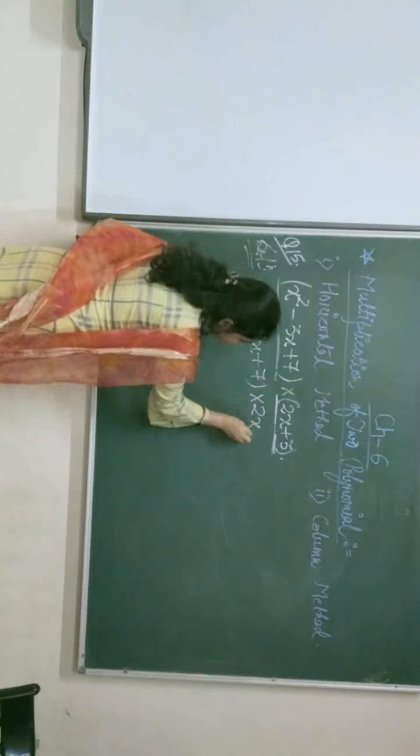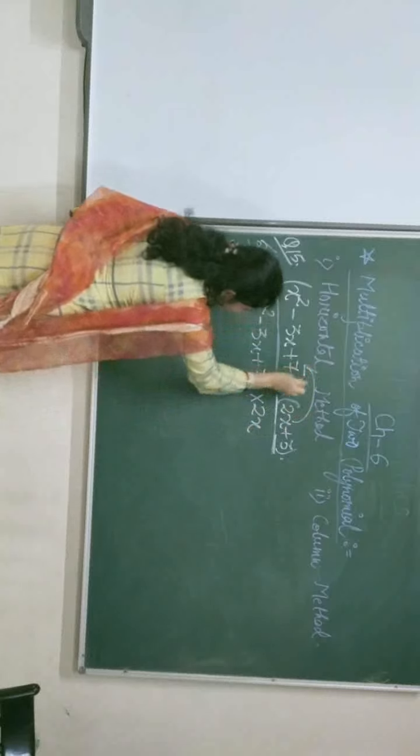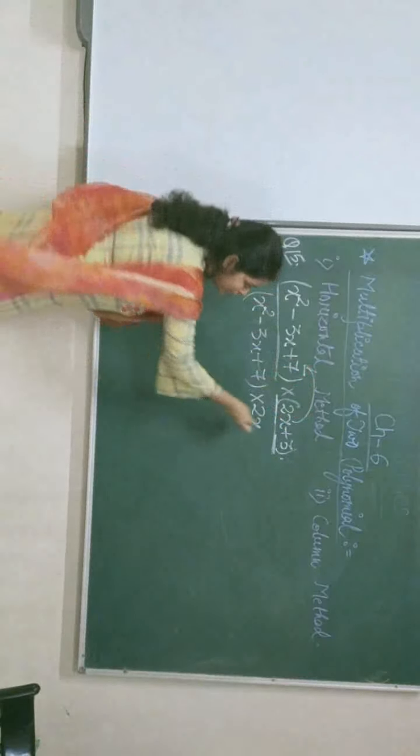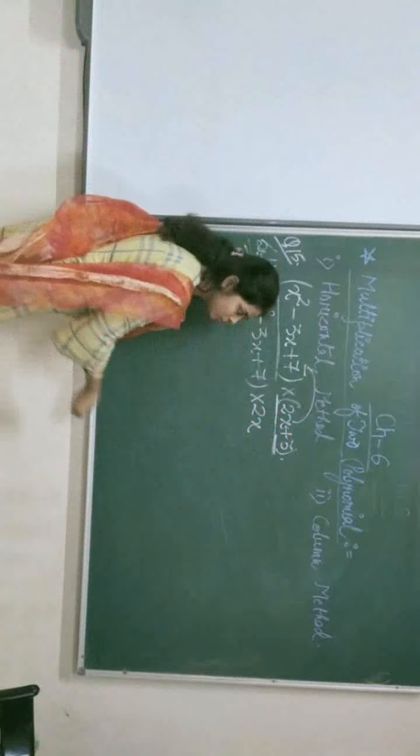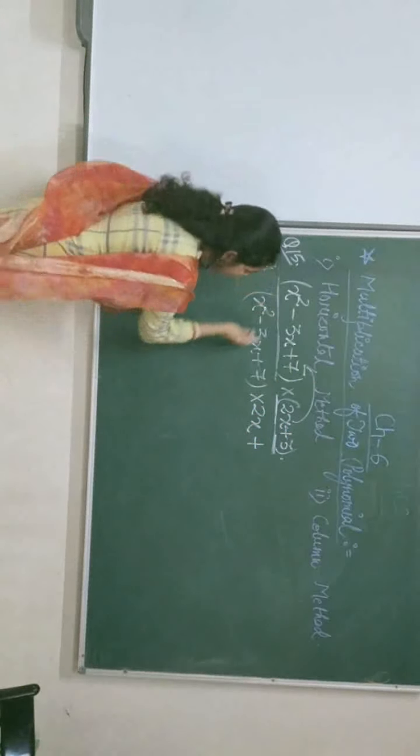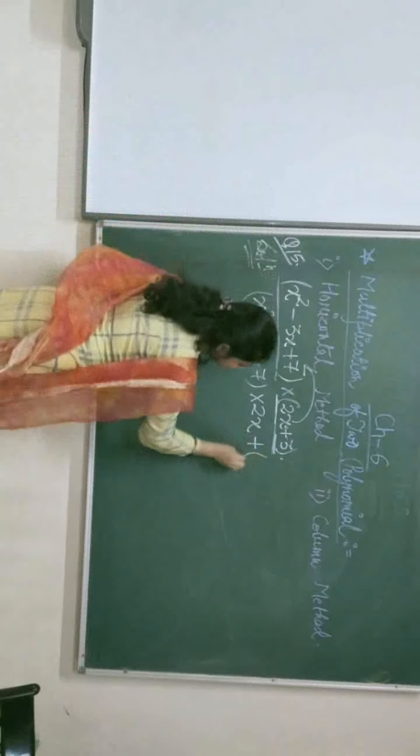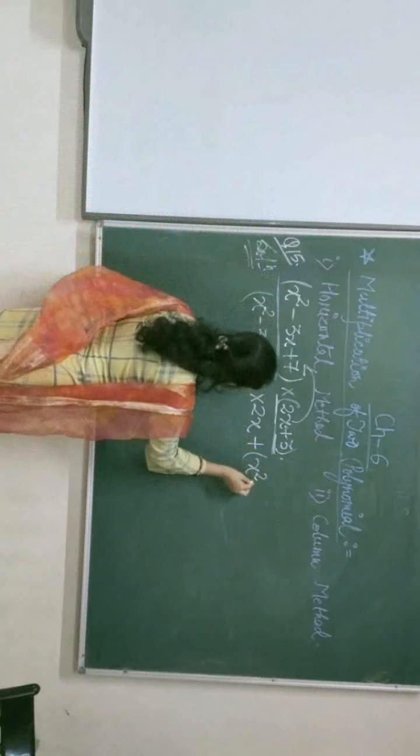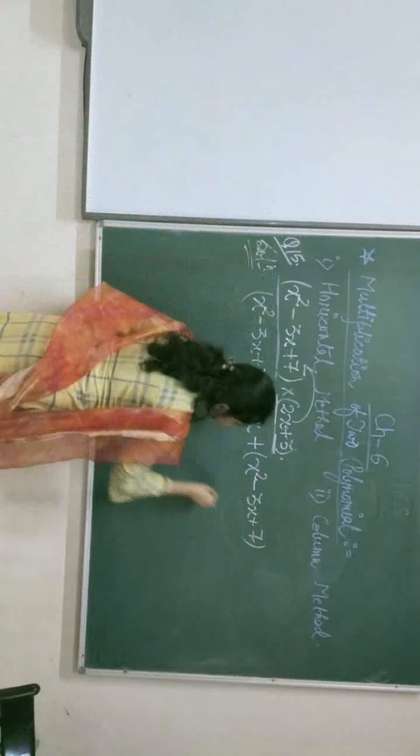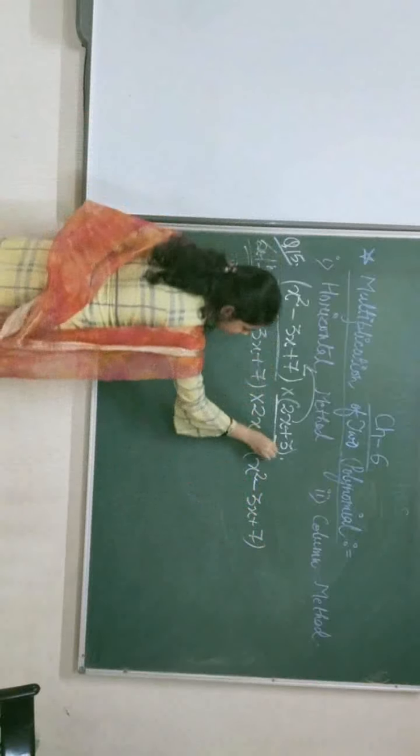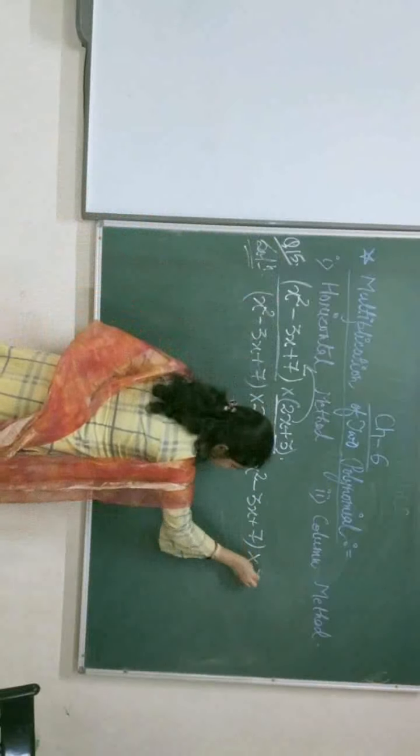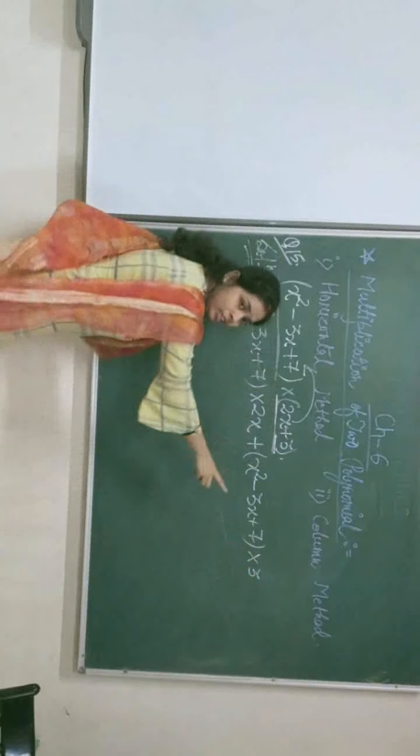At first, we have to multiply 2x squared (the first term) with this polynomial. After that, what is given? Addition sign is given. We have to write the addition sign. After that, we have to write the first polynomial again. And in the second term, what is given? A constant is given which is 3, so we have to multiply it with 3.